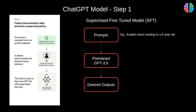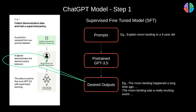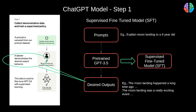Step one involves collecting a dataset of human-written demonstrations of the desired output behavior on prompts submitted to the OpenAI API. The input prompts also include some prompts written by the labelers themselves. The outputs are called 'desired outputs' because they are exactly the human labelers' responses to the prompts. For example, for the prompt 'explain moon landing to a 6-year-old,' a desired output could be 'the moon landing happened a long time ago in 1969.' This dataset is used to train the GPT 3.5 model and establish the first supervised baseline, or Supervised Fine-Tuned (SFT) model.